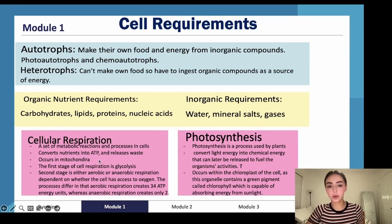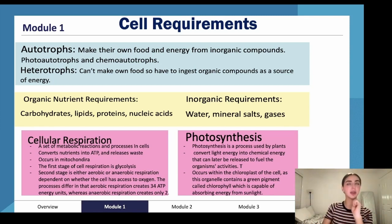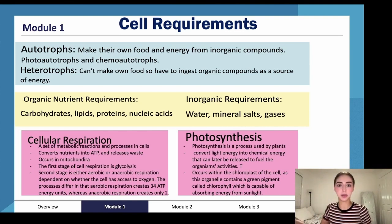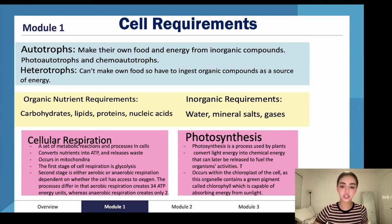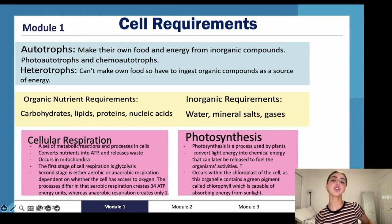Think of ATP like money and dollars — dollars are how we measure money in Australia. Similarly, ATP measures energy: if you have 34 ATP, that's how much energy you have. If you're performing aerobic respiration you produce 34 ATP, whereas anaerobic respiration produces only 2 ATP — much less.